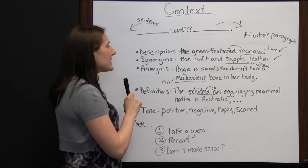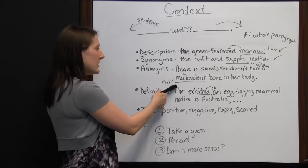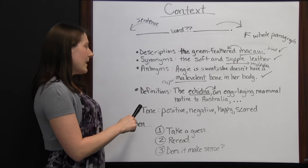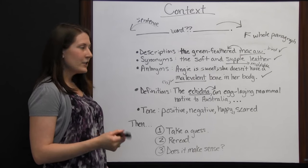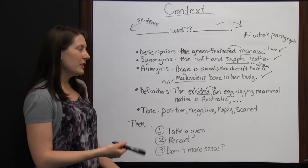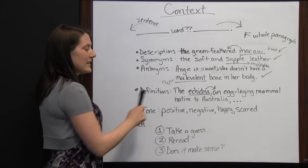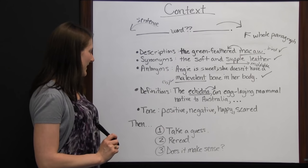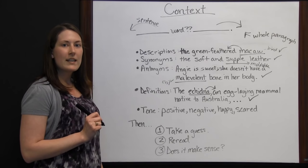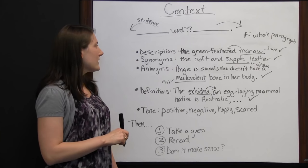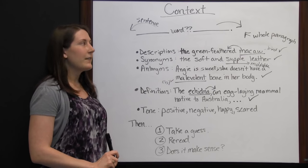For 'malevolent,' thinking 'evil' — 'She doesn't have an evil bone in her body. She is sweet.' — makes sense. For 'echidna,' since the definition is provided in the sentence itself, you would just read on from that point. Once you've checked that your guesses make sense, you have a pretty good idea of what those words mean. Using these context clues — description, synonym, antonym, definition, or tone — can help you figure out that pesky unfamiliar word.